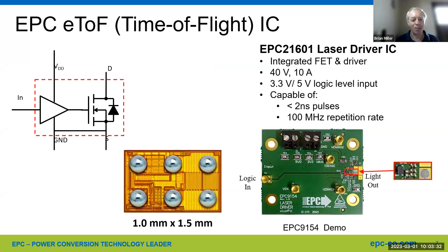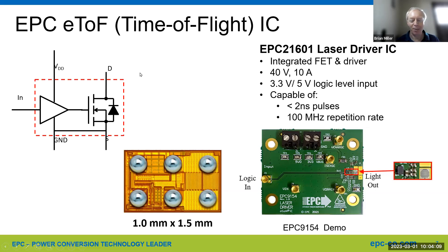How can GAN FETs help here? The newer advance of GAN FETs is actually a GAN IC — a monolithic IC. An example shown here has a FET on the right-hand side and on the left-hand side a very fast gate driver. This whole thing is only 1 by 1.5 millimeters. The schematic is pretty simple: a high-speed gate driver on the left and a single GAN FET on the right. The D-pin is where you put a diode, like a laser diode. The GAN FET turns on and off very quickly, enabling a nice sharp pulse, which helps the accuracy of the system.